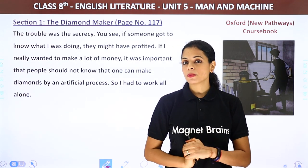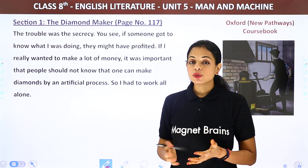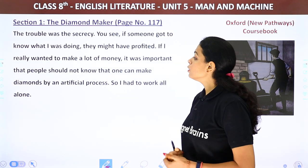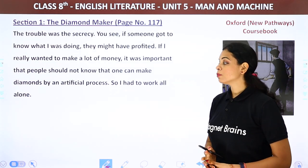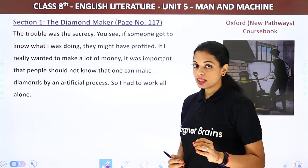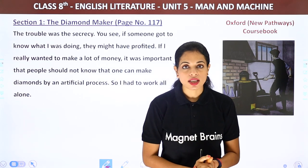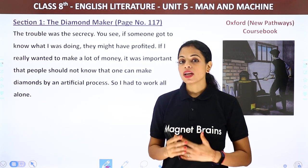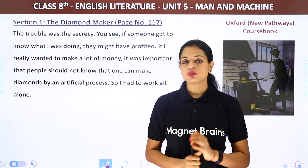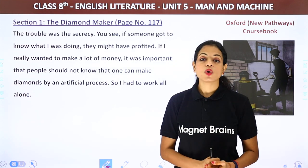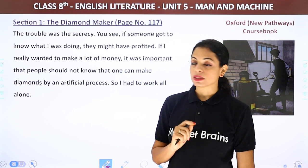'You see, if someone got to know what I was doing, they might have profited — they would have told everyone about this process. If I really wanted to make a lot of money, it was important that people should not know that one can make diamonds by an artificial process. Otherwise the value of diamonds would decrease. So I had to work all alone, never telling anyone about my work.'